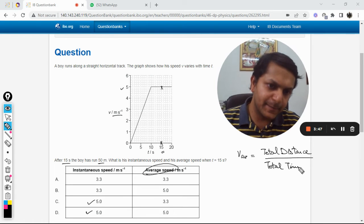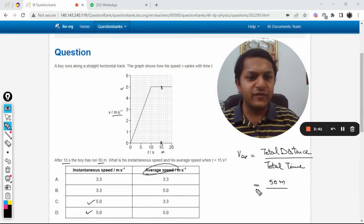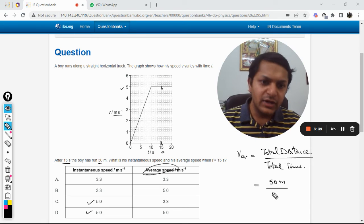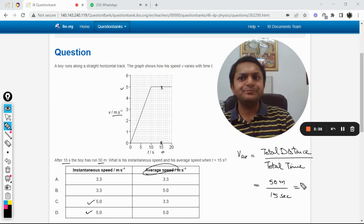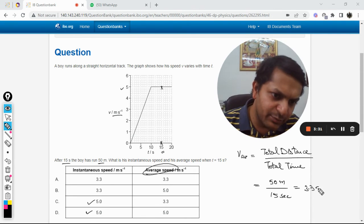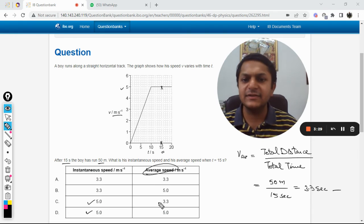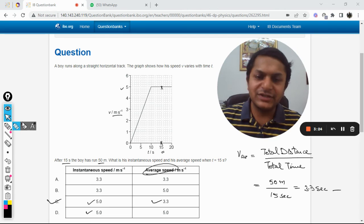The total distance, as given in the question itself, is that the boy has run 50 meters, and the total time is 15 seconds. So this will come out to be 3.3. Your answer will be C. All the best!